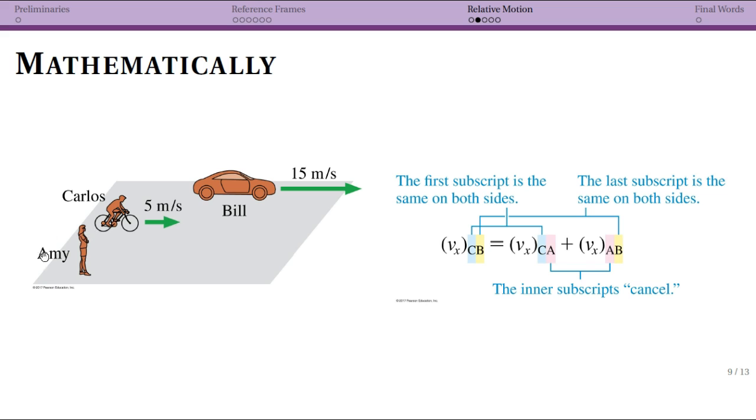So Amy is defining our reference frame. This is one thing to notice: whenever we're defining reference frames, we're usually defining the reference frame with respect to an object or, in this case, a person. So Amy is our reference frame, and the reason we say that is that Amy is not moving. So when we define a reference frame, we want to talk about something that is still, something that is stationary with respect to that reference frame.